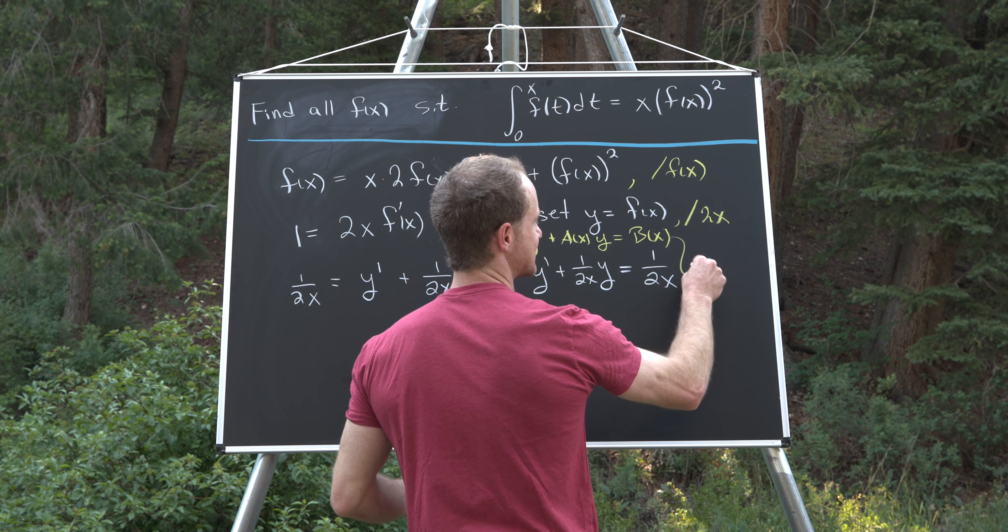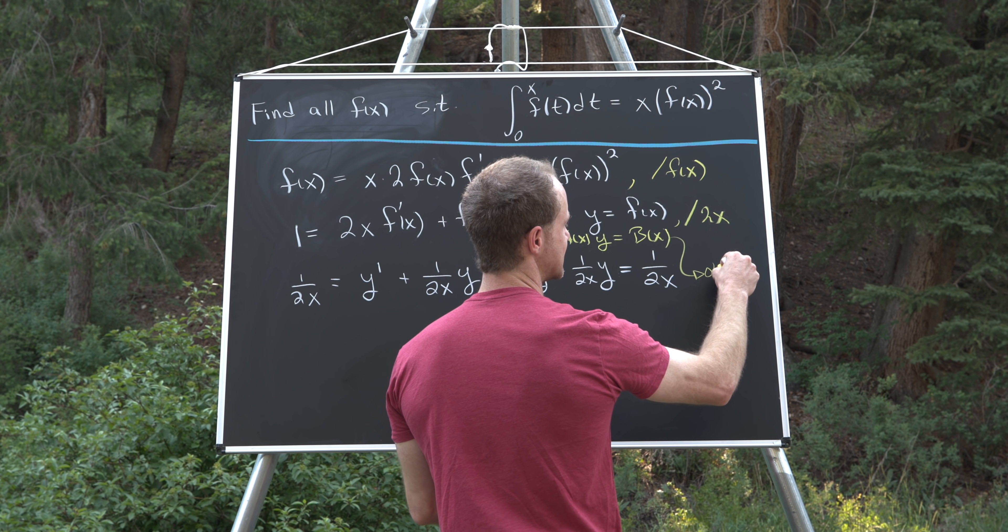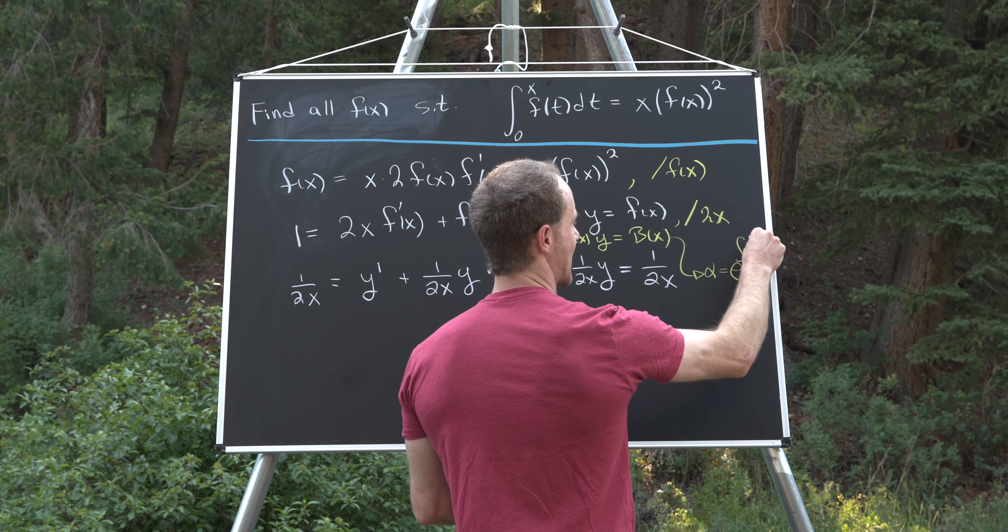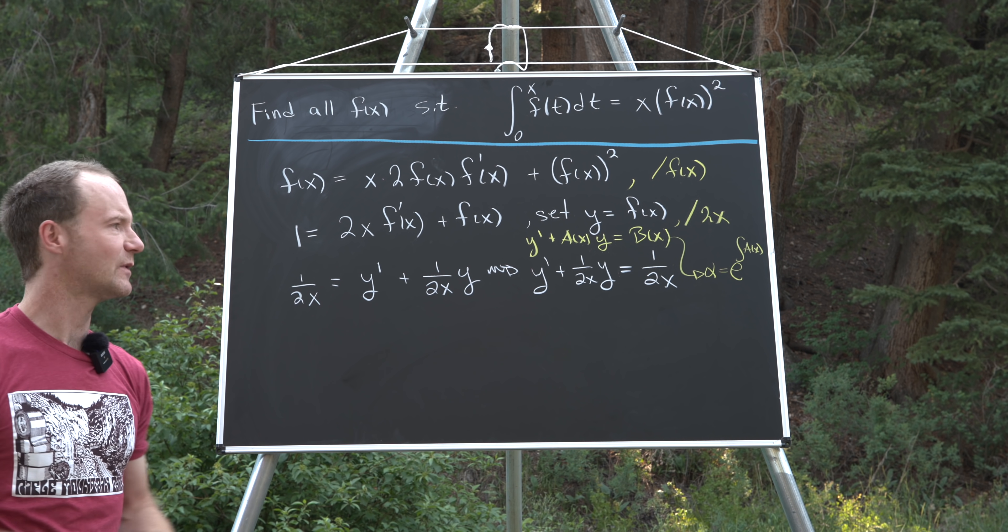And in this kind of setup, the integral factor, which I like to call alpha, is equal to the exponential of the antiderivative of a of x. So let's see what that is for us.